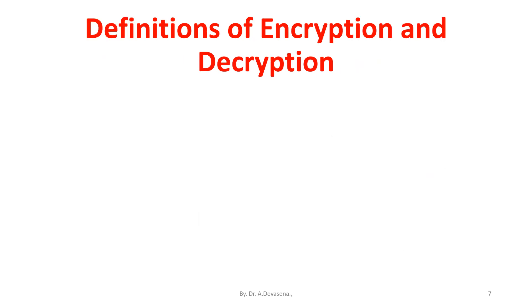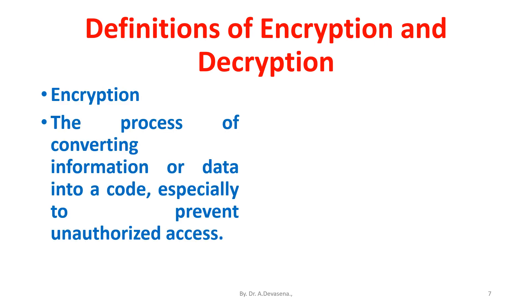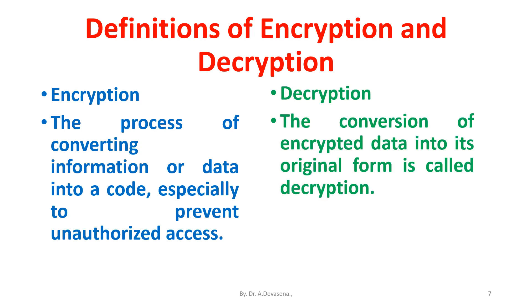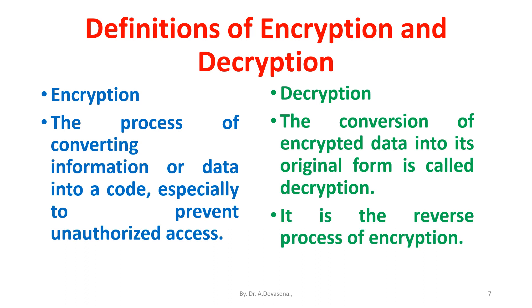Encryption is the process of converting information or data into a code, especially to prevent unauthorized access. Decryption is the conversion of encrypted data into its original form; it is the reverse process of encryption.